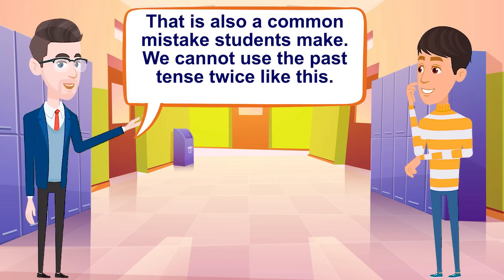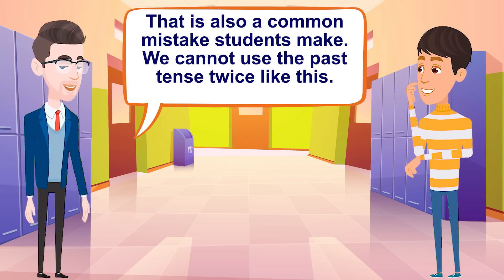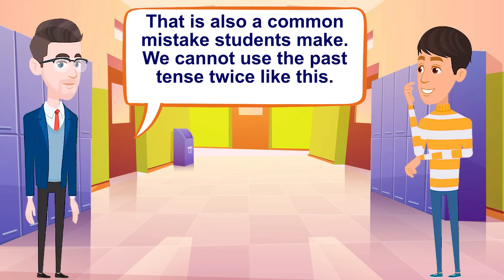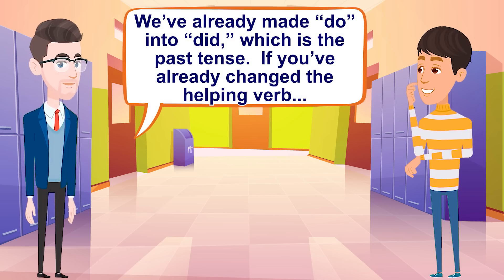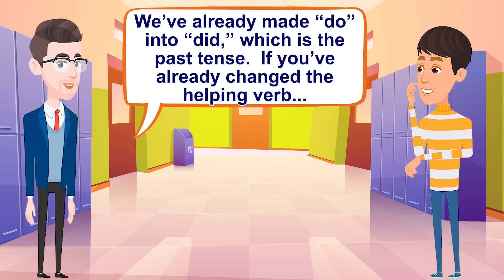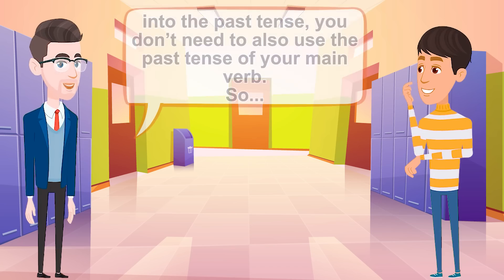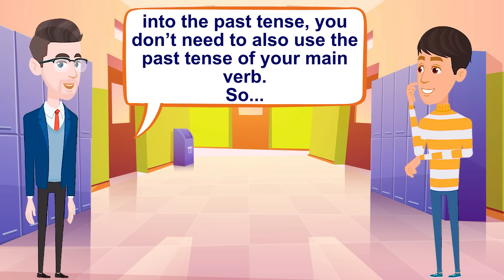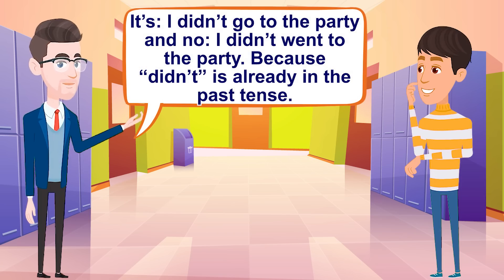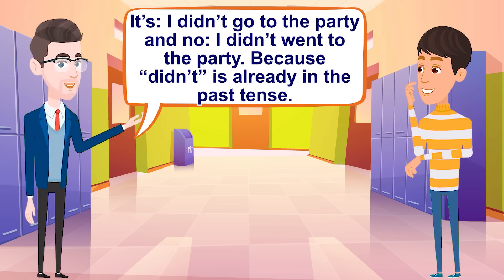That is also a common mistake students make. We cannot use the past tense twice like this. We've already made 'do' into 'did,' which is the past tense. If you already changed the helping verb into the past tense, you don't need to also use the past tense of your main verb. So it's 'I didn't go to the party,' not 'I didn't went to the party,' because 'didn't' is already in the past tense.